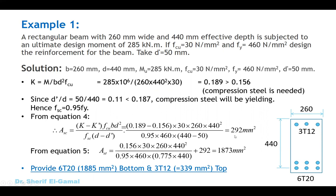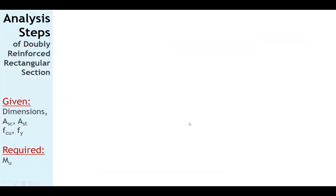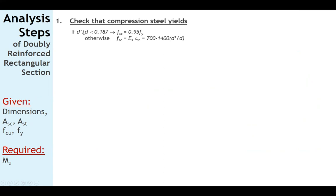This concludes the design example and the design steps for doubly reinforced rectangular sections. Now let's go to the analysis steps. Given information: dimensions, area of tension steel, area of compression steel, Fcu and fy. Required: the ultimate capacity of the cross-section. Step 1: Check if the compression steel yields by calculating d'/d. If d'/d < 0.187, Fsc = 0.95 fy; otherwise Fsc = 700 − 1400 × (d'/d).